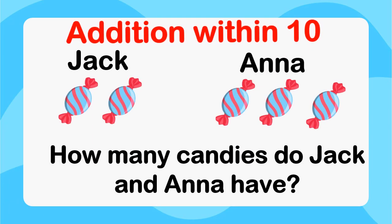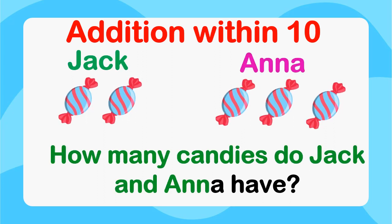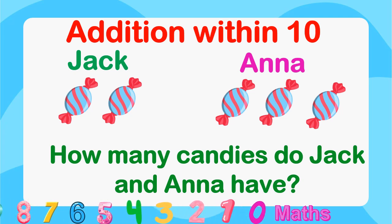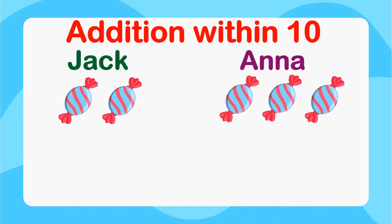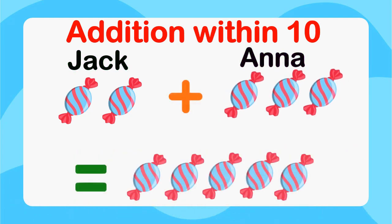Addition within 10. Jack and Anna — how many candies do Jack and Anna have? 2 plus 3 equals 5.